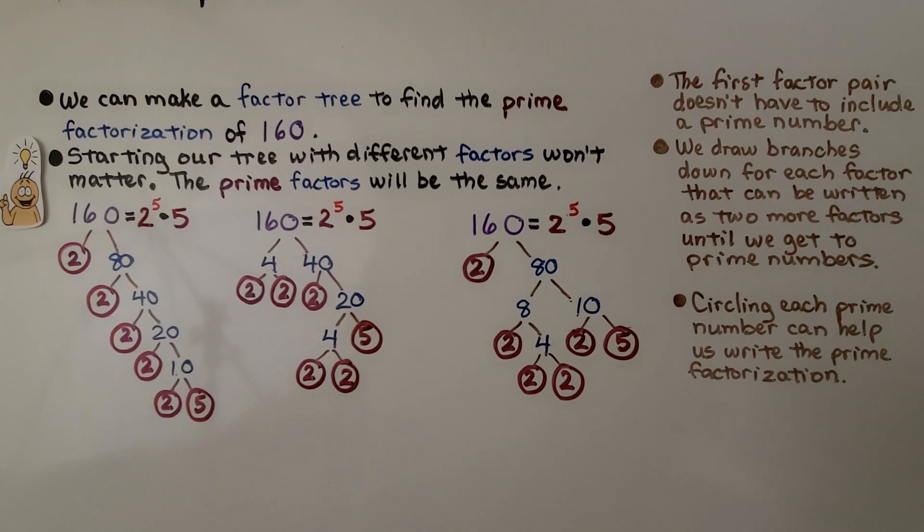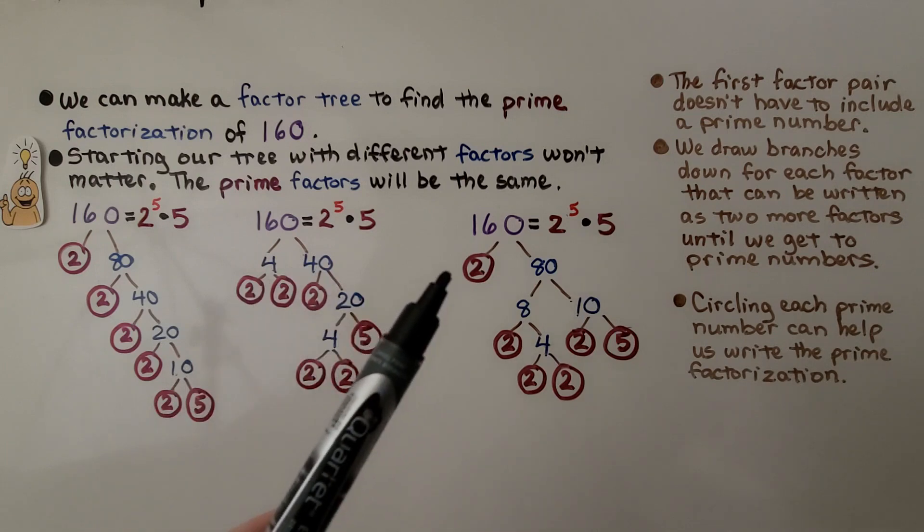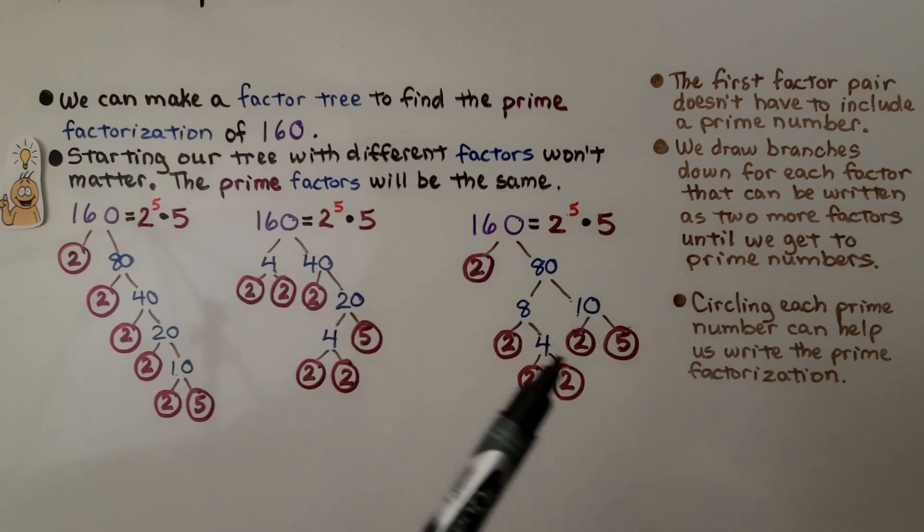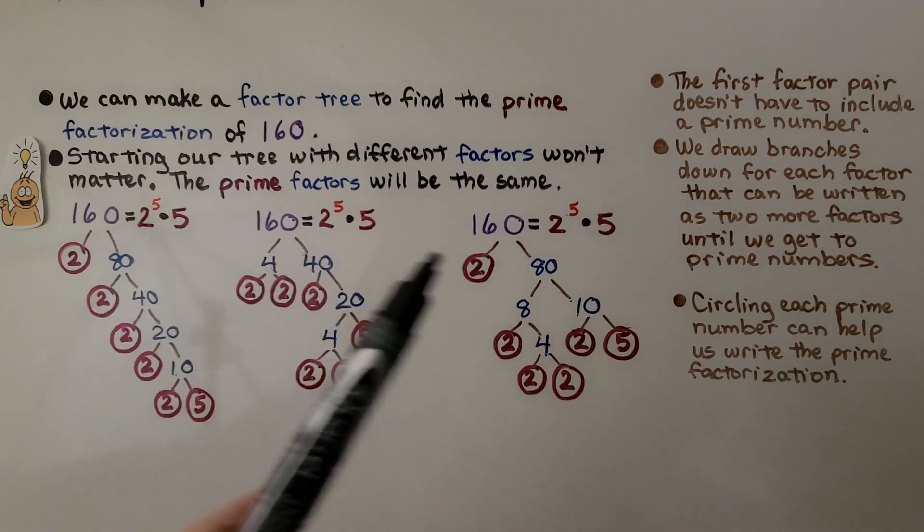So we can make a factor tree to find the prime factorization of 160. Starting our tree with different factors won't matter. Here we're starting with a 2 and an 80, because 2 times 80 is 160. Here we're starting with 4 times 40, and here we're starting with 2 times 80, but we're splitting it up differently. The prime factors will be the same. No matter what we do, we've got 2 raised to the fifth power times 5.